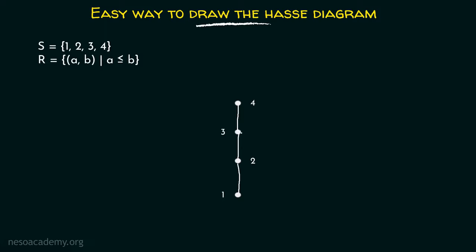For example, if 2 is not related to 3 or 4, then we check whether 1 is related to 3 or 4 and draw those edges accordingly. This is the procedure to follow in order to draw the Hess diagram easily. There is no need to start from the directed graph or follow the complete procedure every time, although I recommend following the procedure.